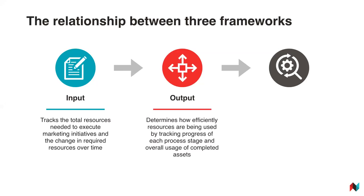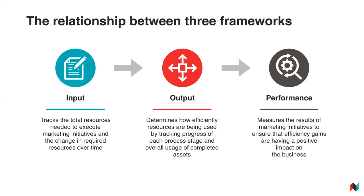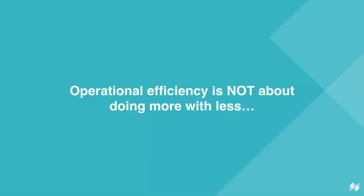Output is all about the effectiveness with which those resources are being used — how much you're able to produce, how much you're able to reuse, and how far you're on track to produce everything on time. Performance is your context — it's about ensuring that these changes are having the right impact. If you can decrease your input or increase your output but your overall performance is decreasing, then you aren't being efficient — you're just wasting time changing your processes. What operational efficiency is not about is simply being able to do more with less.